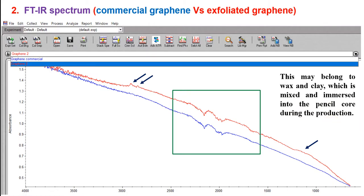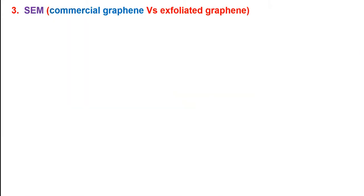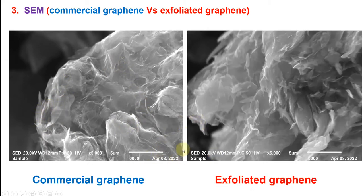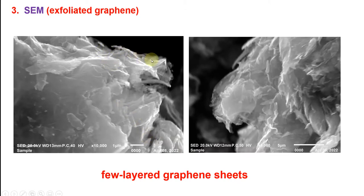Next, let's look at SEM. This is commercial graphene - you can see the few layers. This is exfoliated graphene, both at the same scale. You can see the few layers are so nice. This means I really got graphene. You can see the few layers here for exfoliated graphene. It's just around 5,000 to 10,000 - you can see how many layers.